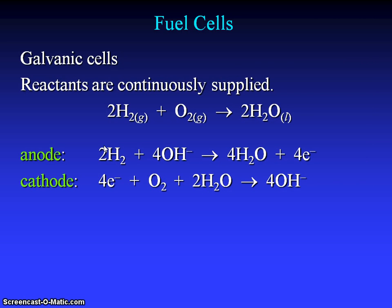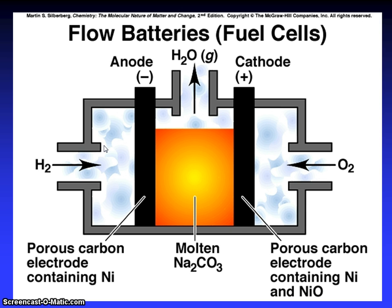What is a fuel cell? A galvanic cell where reactants are continuously supplied. 2H2 + O2 give 2H2O. At anode and at cathode you can see the reactions. Flow battery fuel cell: anode, cathode, 2H2 gas. You can see the supply for 2H2 and O2, and molten sodium carbonate. Porous carbon electrodes containing nickel and nickel oxide.